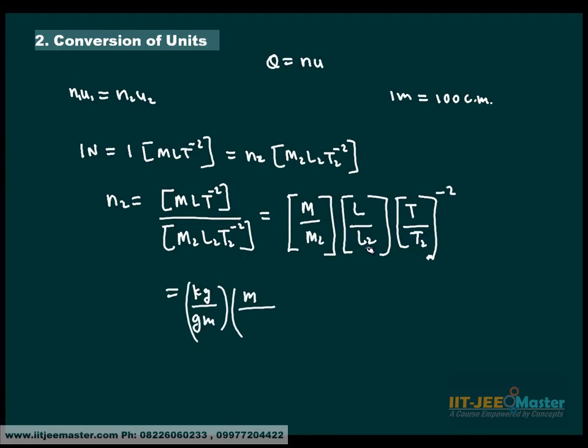L, L2 is cm. This is both second and second. It comes out to be kg upon g is 1000, 10 to the power 3. M upon cm is 100. And this is 1. That comes out to be 10 to the power 5.